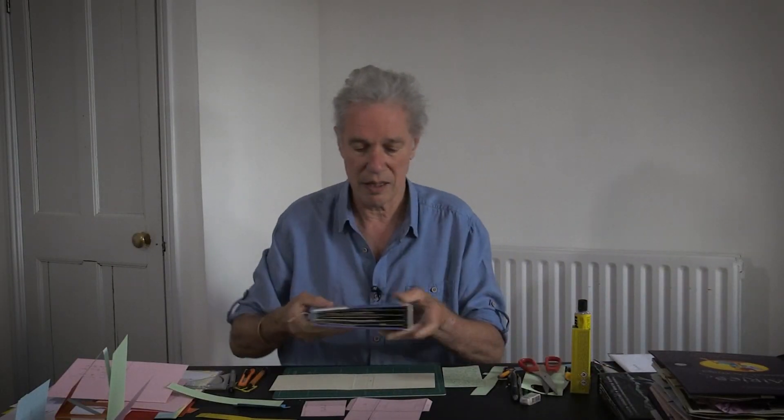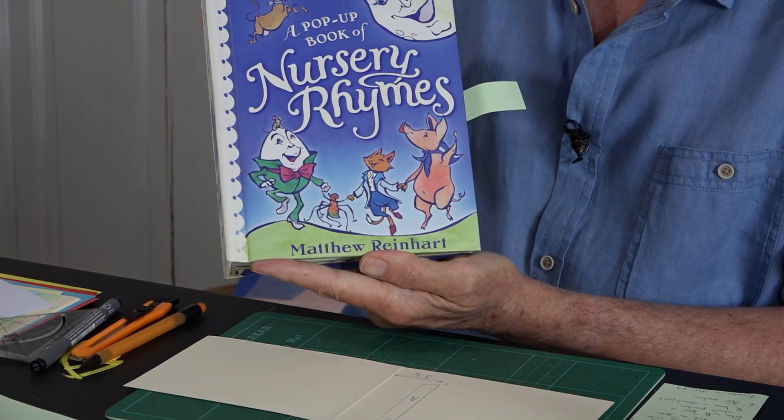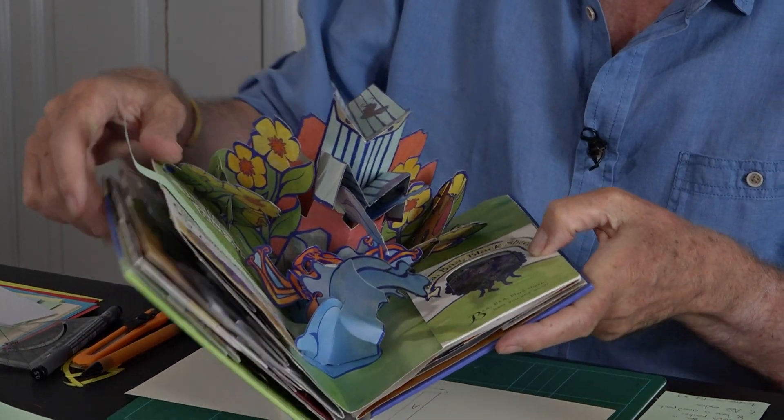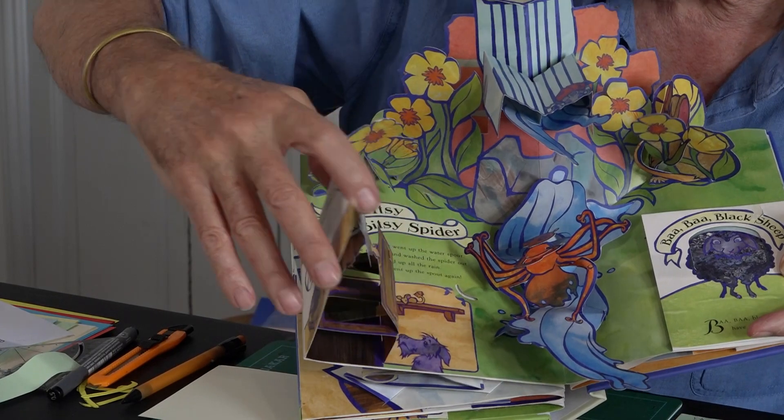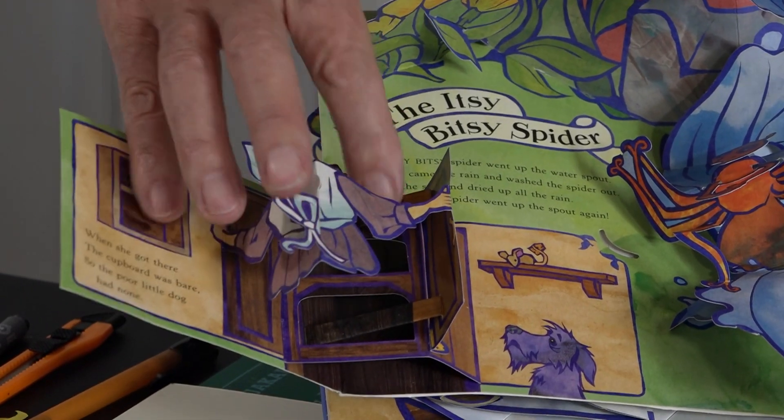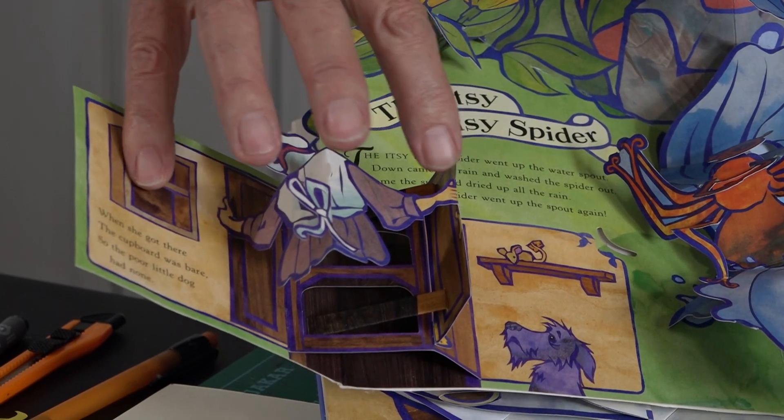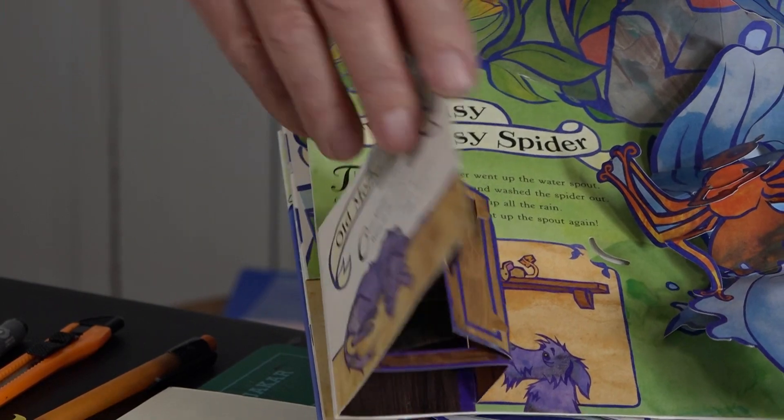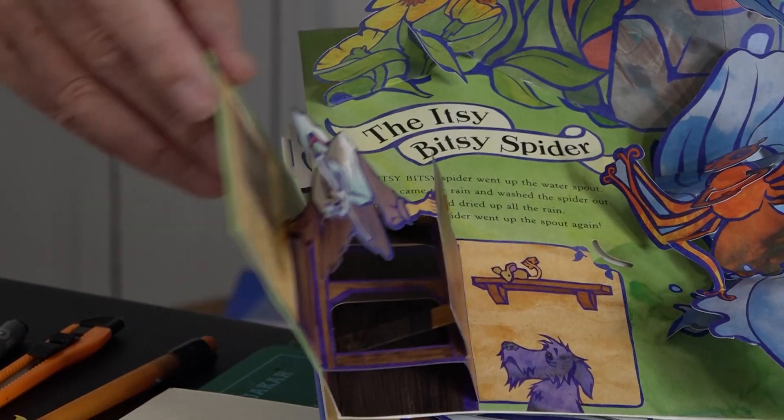There are a lot of other really nice examples. There's one here, A Pop-up Book of Nursery Rhymes by Matthew Reinhart. We open the flap and there is Old Mother Hubbard, with two struts opening the door. The door actually moves this figure of Old Mother Hubbard. I'll explain how to do that later on.